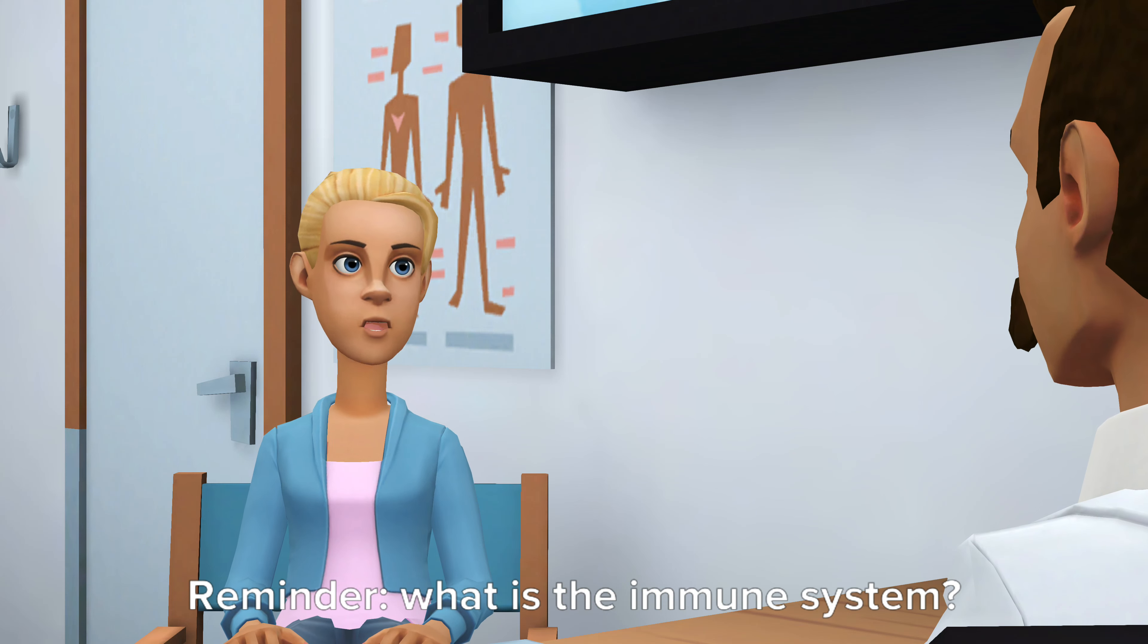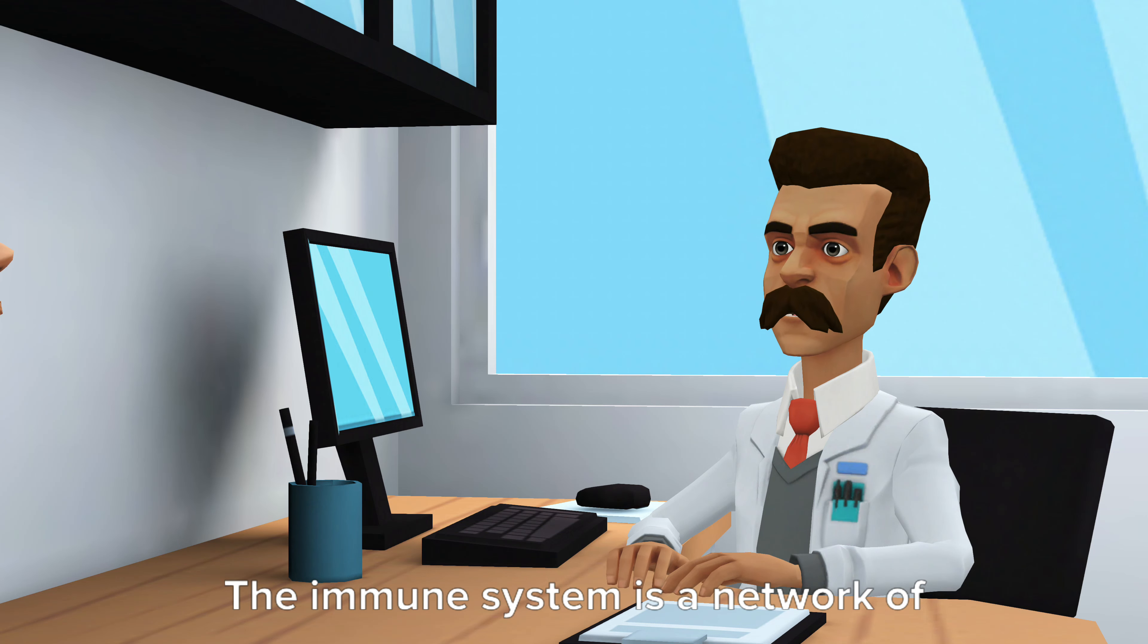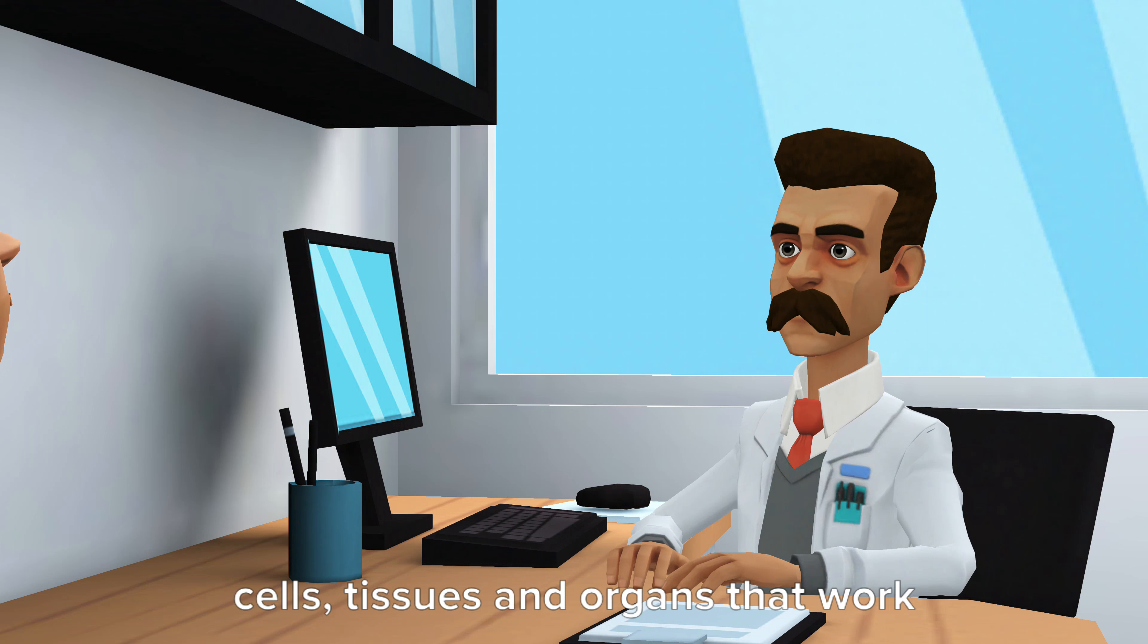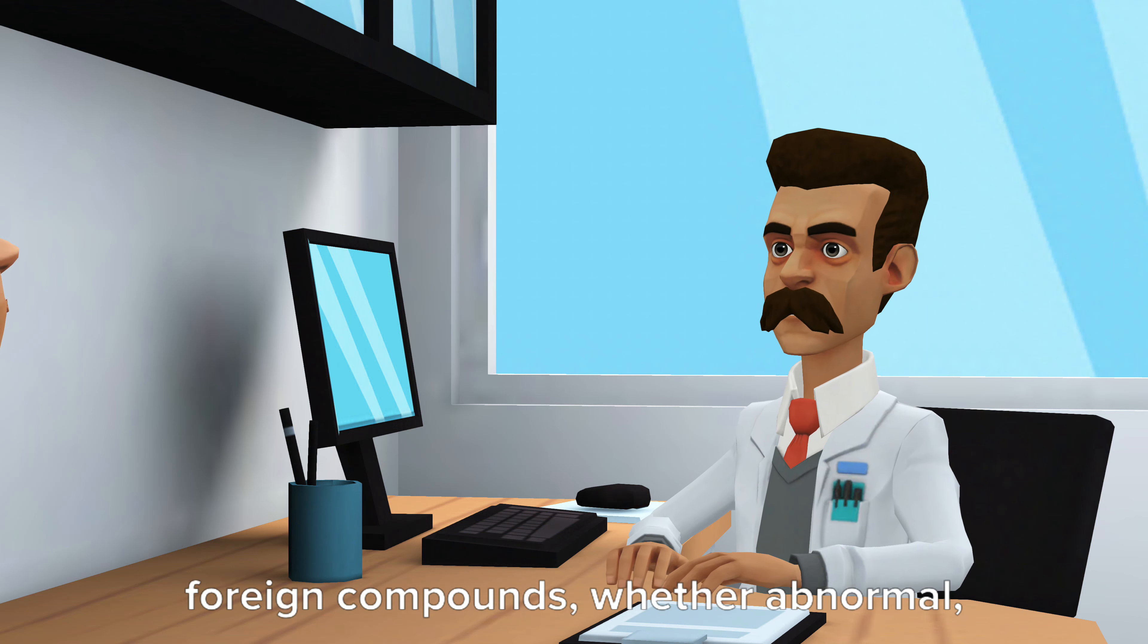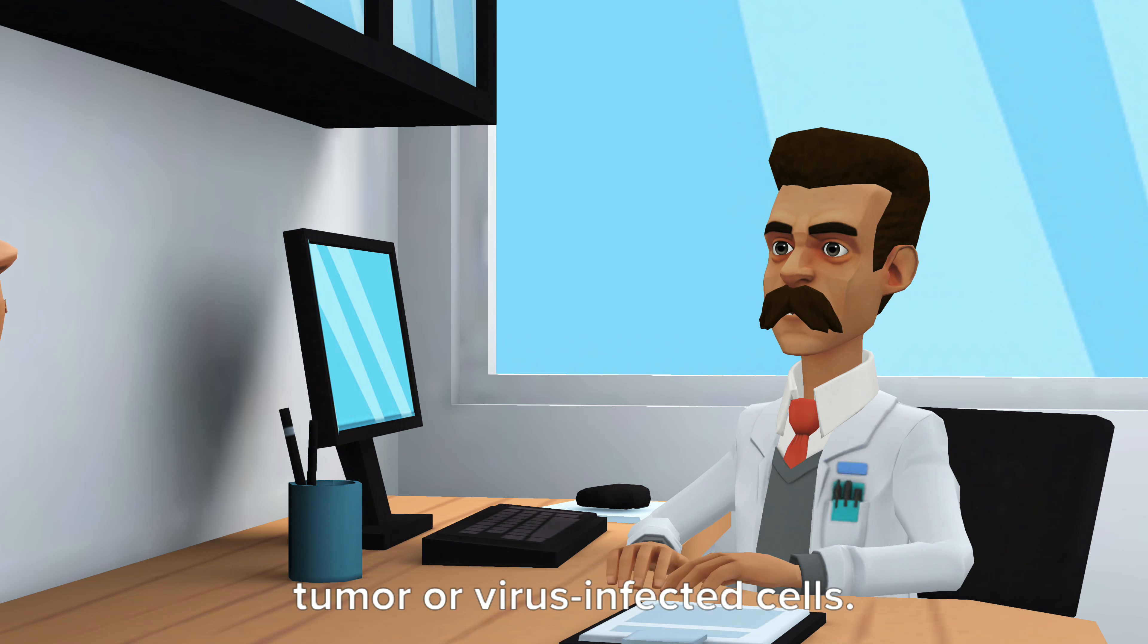Reminder, what is the immune system? The immune system is a network of cells, tissues and organs that work together to protect the body from foreign compounds, whether abnormal, tumor or virus-infected cells.